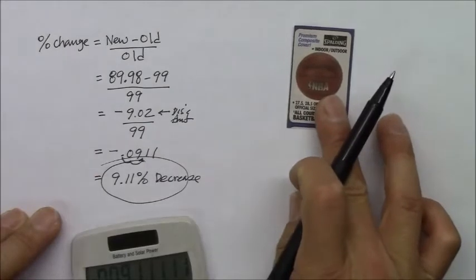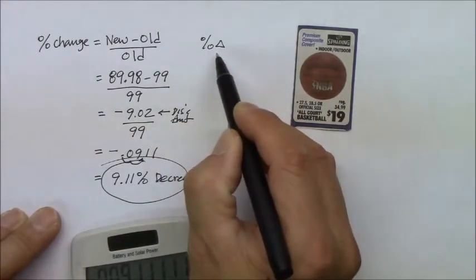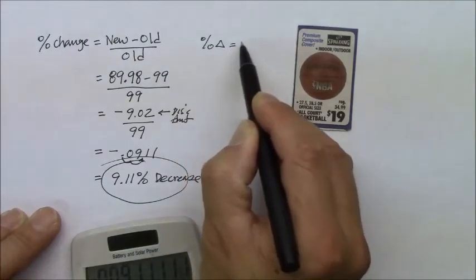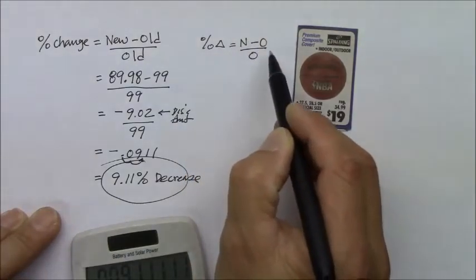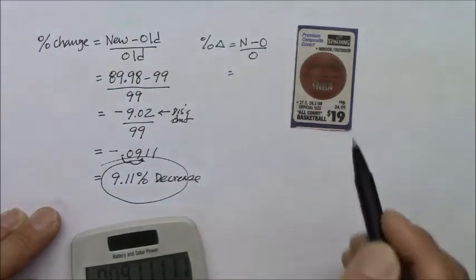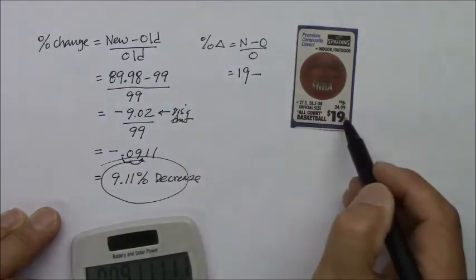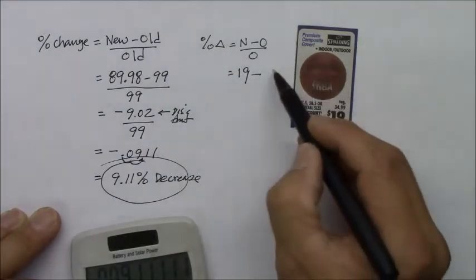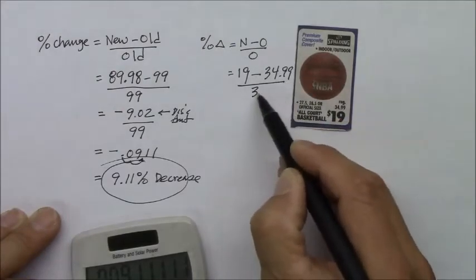Okay. So then you said the percent change, or I like to use the Greek letter delta to represent change, is the new minus the old divided by the old. Or the difference of the new and old divided by the old. The new is $19, minus the old price of $34.99. Divided by the old again, $34.99.